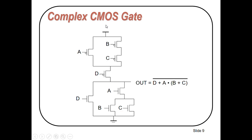This is the standard procedure for implementing any static CMOS circuit. Here we have 4 inputs and we need 8 transistors to implement this function, confirming that for N inputs we need 2N transistors to implement static CMOS functions.